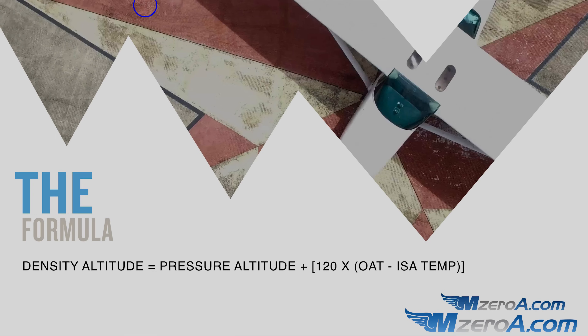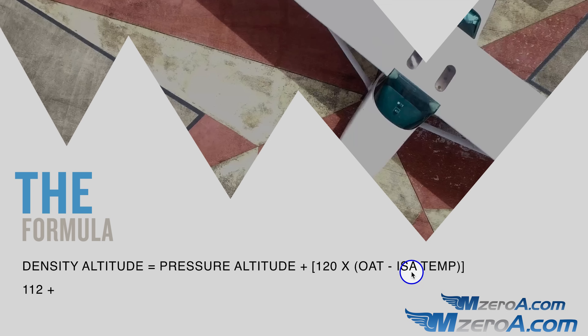The other way to calculate this is using the formula — and this is how I really do it in the real world. Density altitude equals pressure altitude plus 120 multiplied by the difference between your outside air temperature (OAT) and standard temperature (15°C). So: pressure altitude was 112, OAT was 25, standard temp is 15, difference is 10. 120 × 10 = 1,200. Add 112 to get a density altitude of 1,312 feet. Not bad — we said 1,200 to 1,400 from the chart, and we got close.